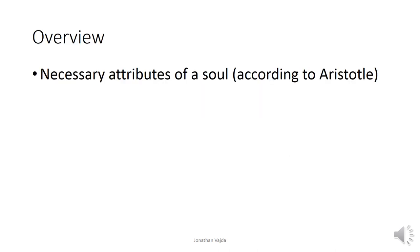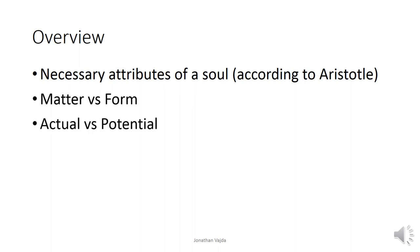In overview of what we're going to be covering in this short series: first we're going to talk about some necessary attributes of the soul according to Aristotle. Then we're going to talk about matter versus form — what is composing things and the composition or the kind of thing that shapes or organizes the matter. Then we'll talk about a distinction between actuality and potentiality — what's actual versus what's potential as it relates to matter and its form. Then all of this comes to its crescendo in talking about the soul and its body.